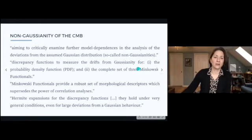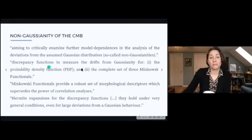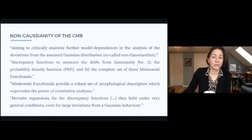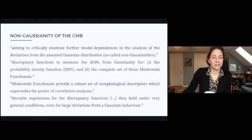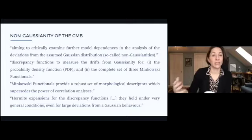Boucher et al. argue they're aiming to critically examine model dependencies in the analysis of non-Gaussian radiation. They construct discrepancy functions to measure drifts from Gaussianity for the PDF and for the complete set of three Minkowski functionals — these functionals provide a robust set of morphological descriptors which supersede the power of correlation analyses. They give Hermite expansions for the discrepancy functions that have been shown to hold under very general conditions, even for large deviations from Gaussian behavior — beautiful mathematical physics aimed to detect drifts from Gaussian assumptions and measure what's going on systematically.